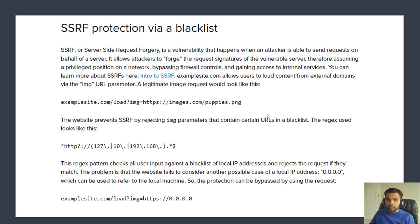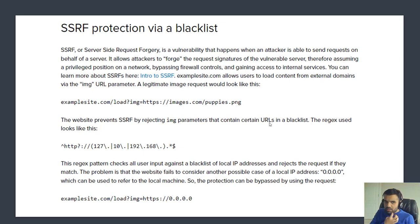Another vulnerability that can arise from weak regex is SSRF — Server-Side Request Forgery, where an attacker tries to execute commands on a remote server using an internal intermediary. In this example, a site loads images from a provided URL and tries to prevent SSRF by blacklisting certain internal IP URLs. However, it doesn't check for `0.0.0.0`, which can be used to refer to the local machine, so you can still bypass it.